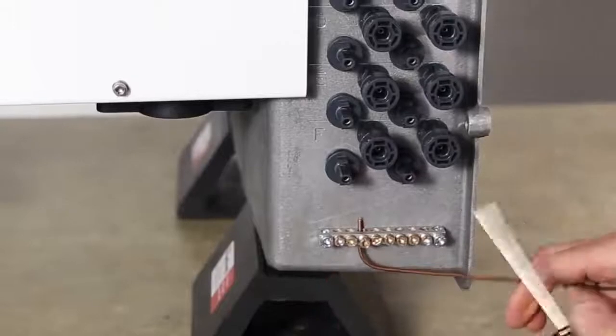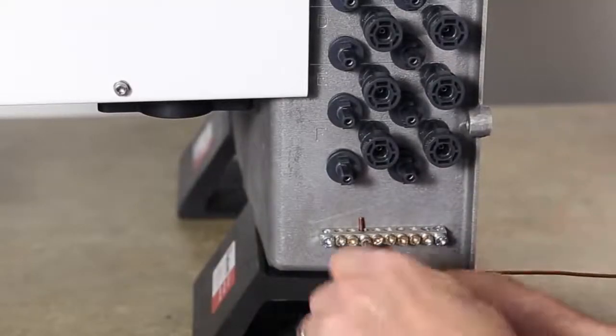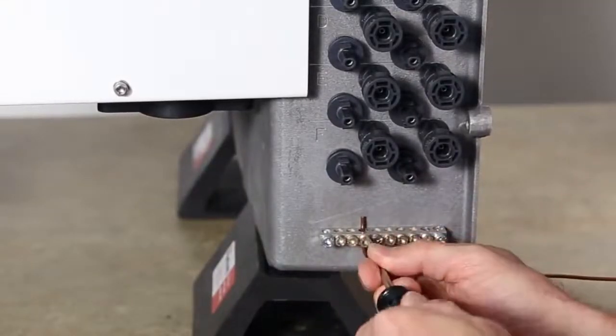The Sunny TriPower Core 1 has a grounding bus bar below the Amphenol bulkhead connectors for attaching DC equipment grounding conductors.